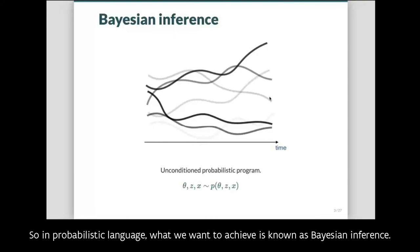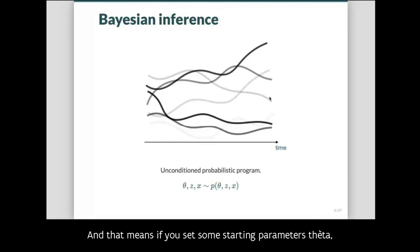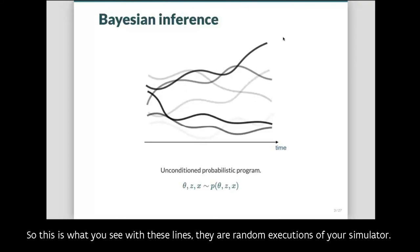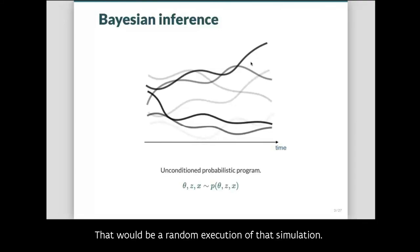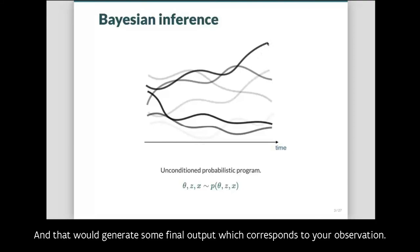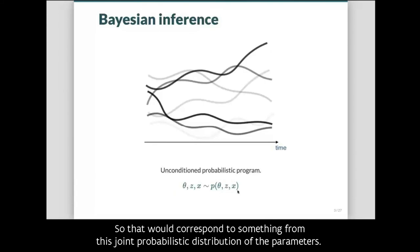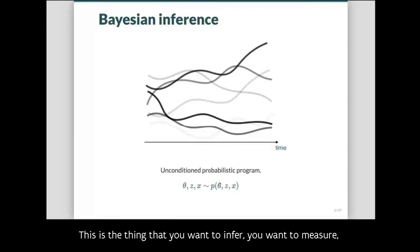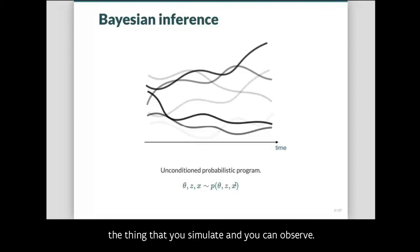In probabilistic language, what we want to achieve is known as Bayesian inference. A simple way to explain it: your simulator is a probabilistic program. If you set some starting parameters theta and let it run, it generates random executions — what you see as these lines. Each random execution starts with parameter values, executes the simulator, and generates a final output corresponding to your observation.